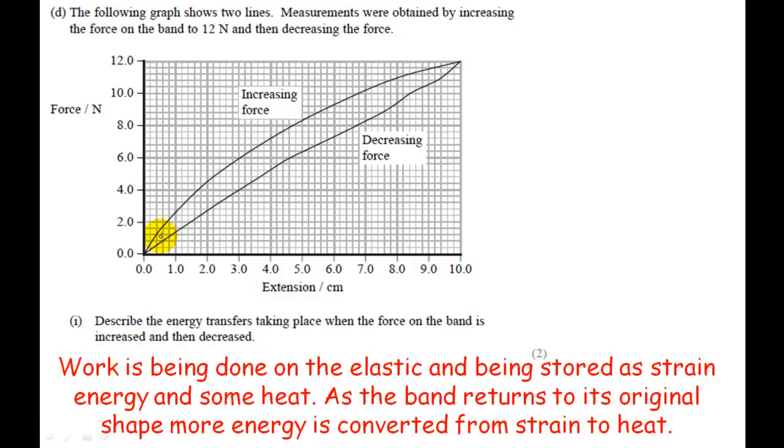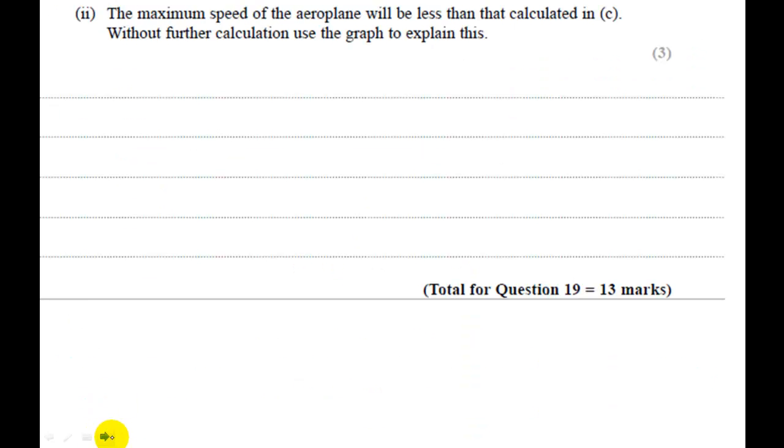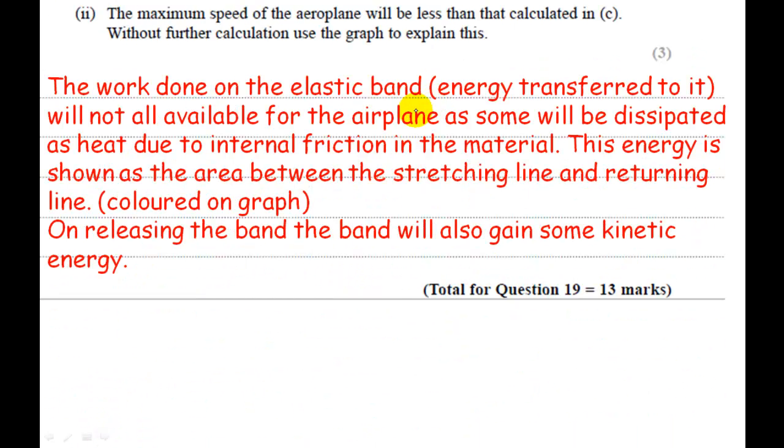So I think I've already explained that a little bit. But essentially, this area here is not going to be available. This amount of energy that I'm coloring in, because remember the area of this graph is energy, will not be available to the airplane because this is what's dissipated as heat.